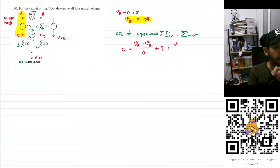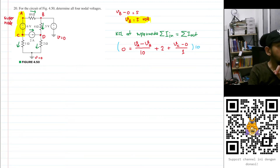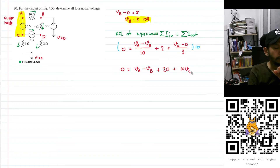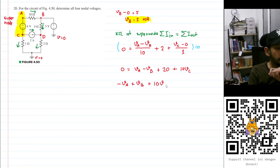Plus 2 amperes, and then plus (VC minus 0) divided by 1. Now let's multiply both sides by 10. I get zero on the left, and (VA minus VB) with 10 cancelled out, plus 20, plus 10VC. Moving everything to the left-hand side: minus VA plus VB plus 10VC equals 20.